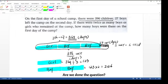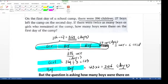Are we done with the question? Not yet. This is how many boys we have on which day? On day 3. But the question is asking how many boys were there on the first day of the camp. So that means I need to add 27 boys back.